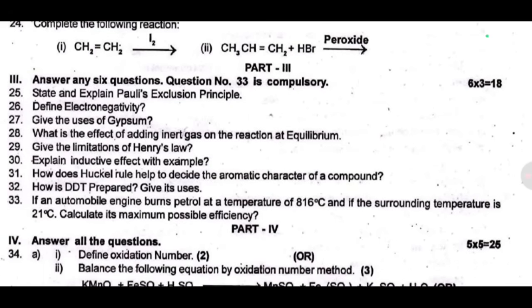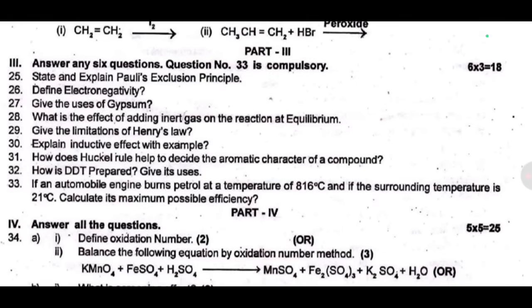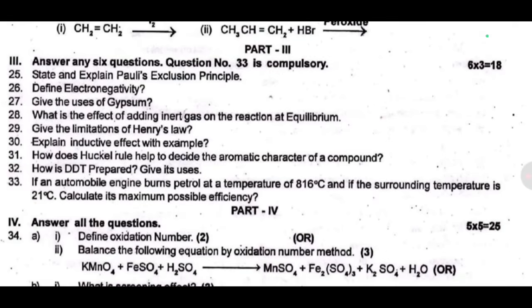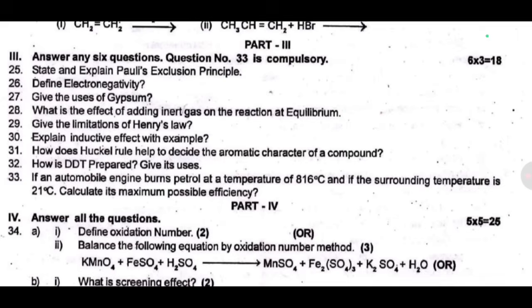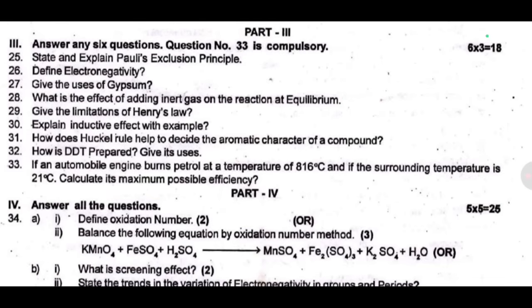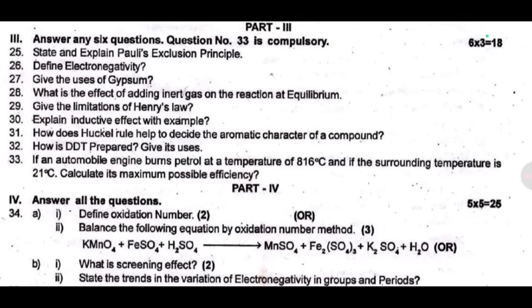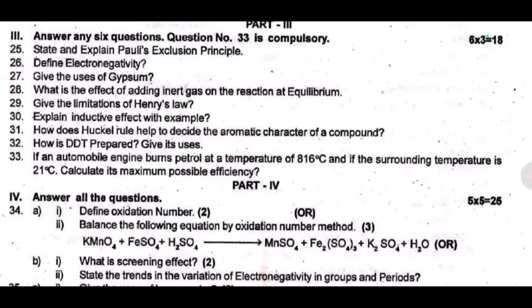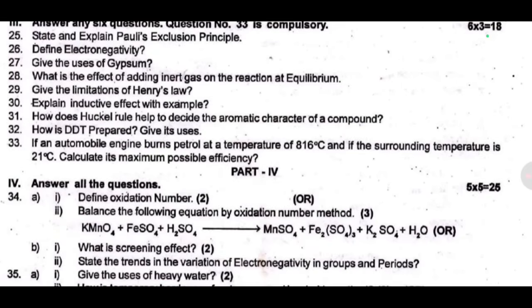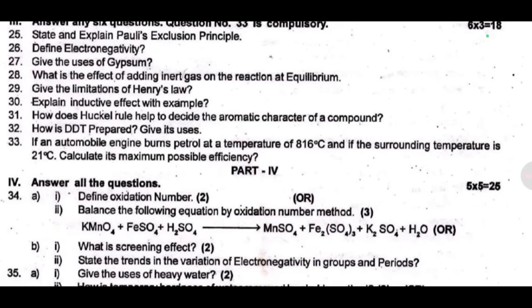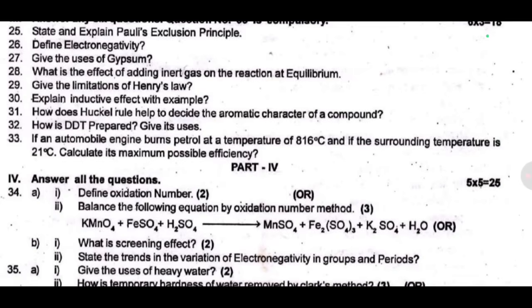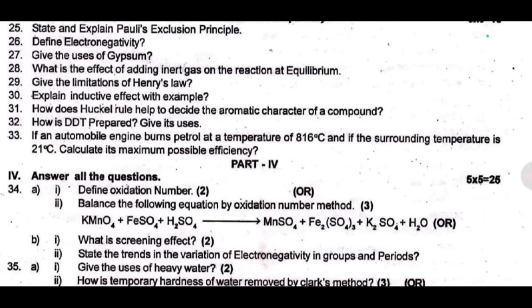Part four — five marks each. Thirty four — (a) find the different oxidation numbers; (b) balance the following equation by the oxidation number method. What is the screening effect? State and discuss the trends in the variation of electron affinity in groups and periods. These are repetitive questions. If you are going to learn 5-mark questions, you will learn these questions.